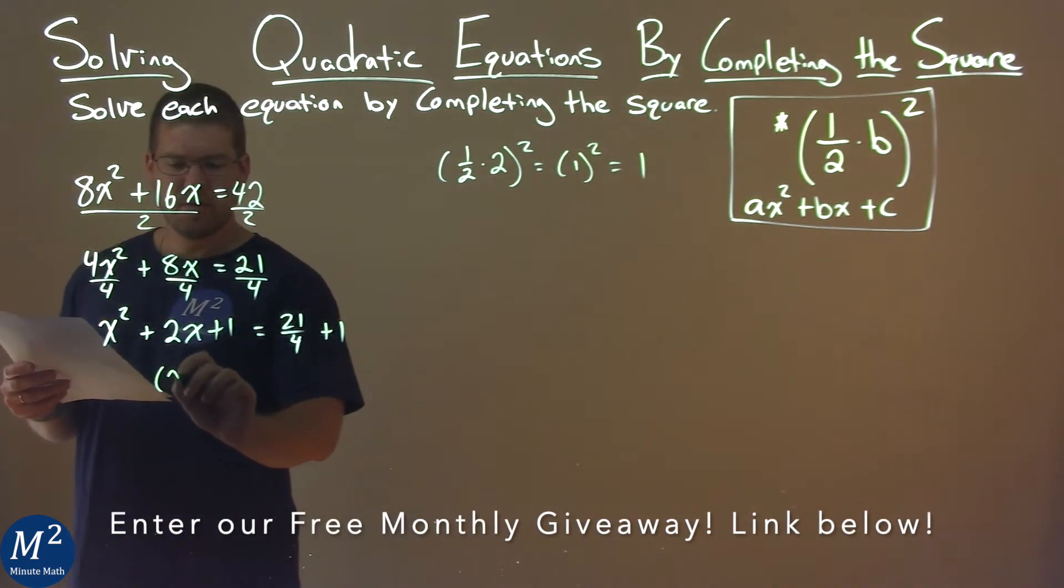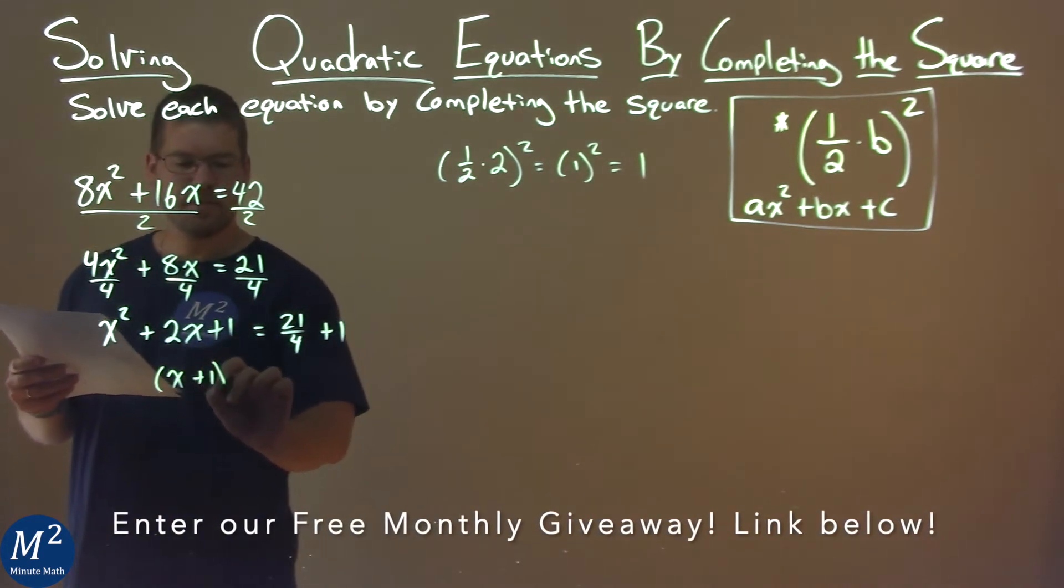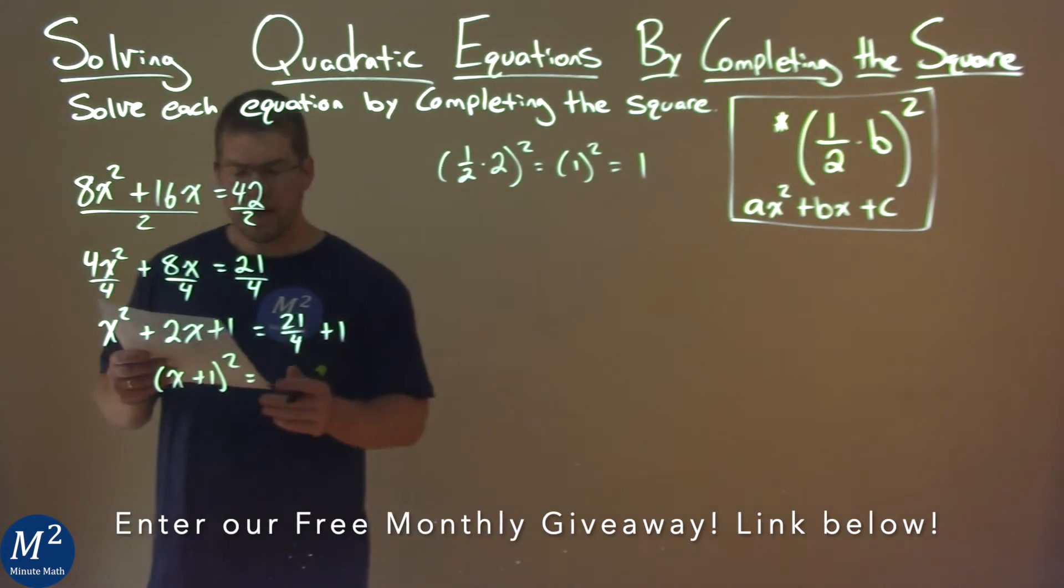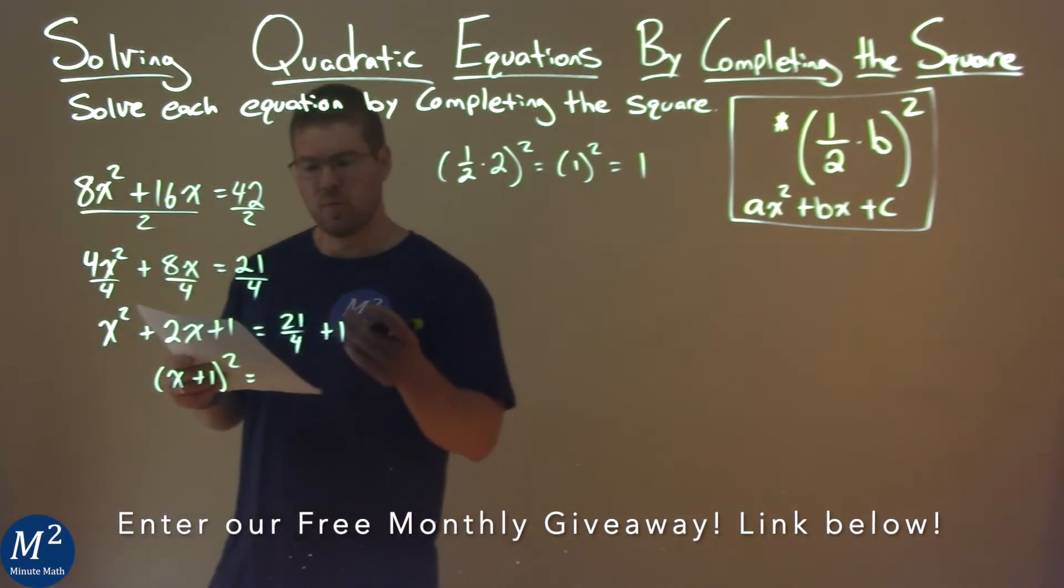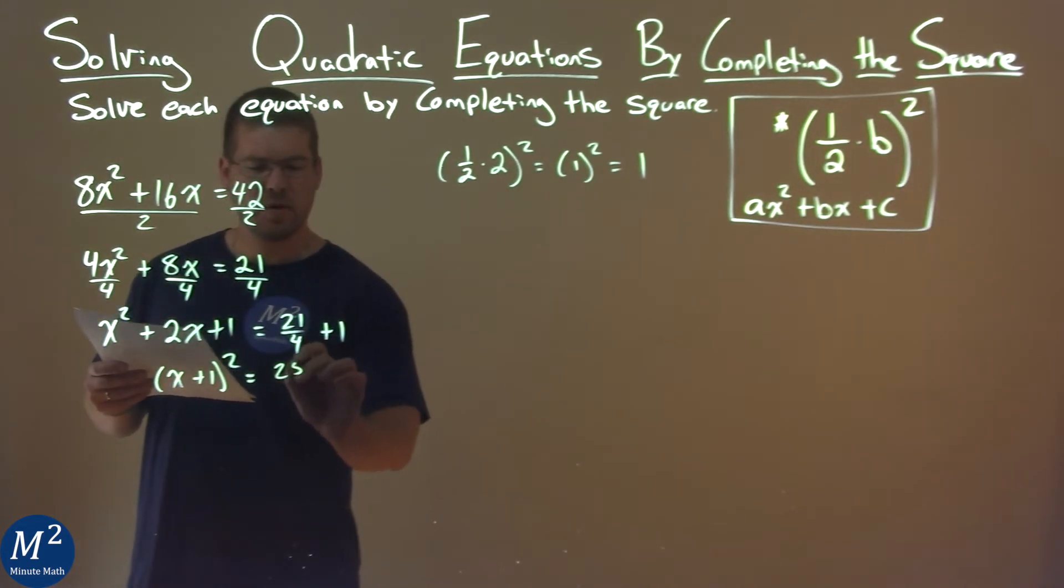The left-hand side is now a perfect square: x plus 1, all squared. The right-hand side, 21 over 4 plus 1, is 25 over 4.